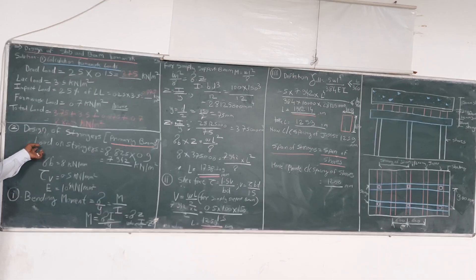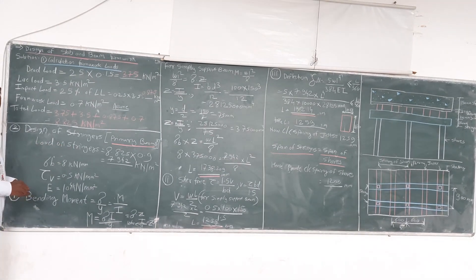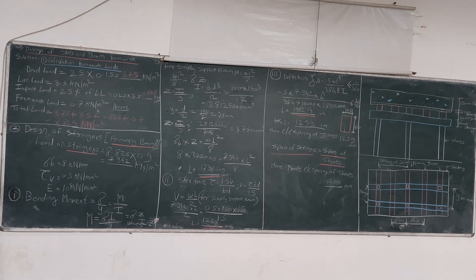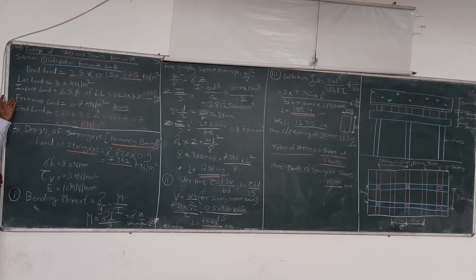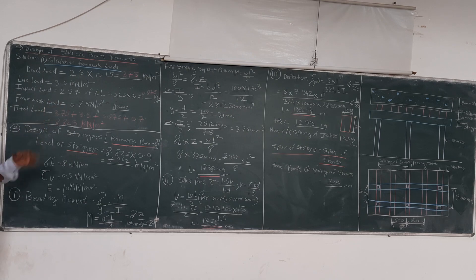Now we will calculate first of all what will be the load coming on the Stringer. The total load we have calculated earlier, that is the dead load, live load, impact load, and the floor finish load. We have 8.825 kN per meter square.